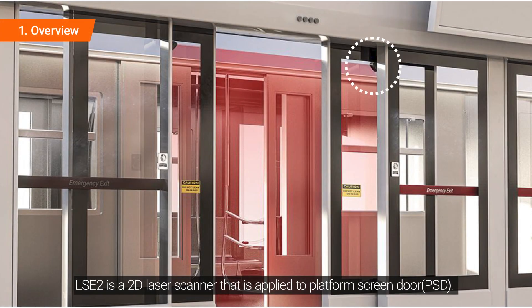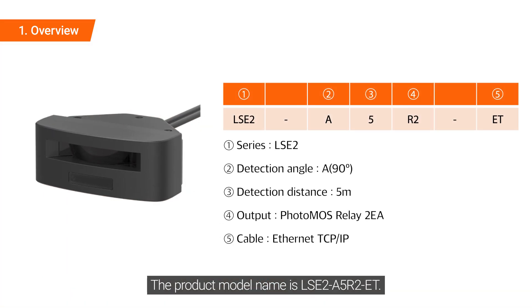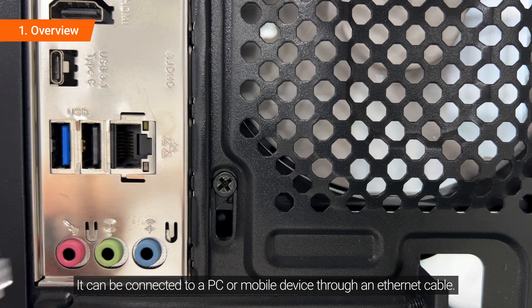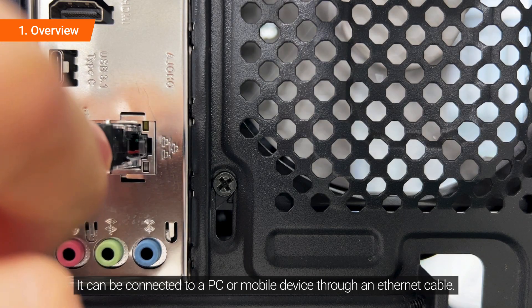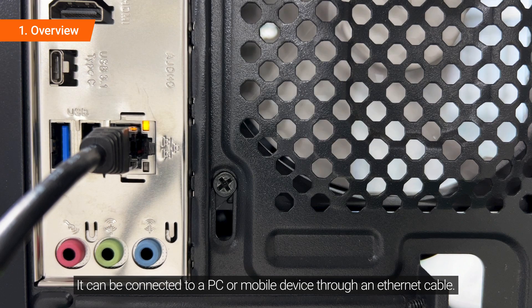LSE2 is a 2D laser scanner applied to platform screen doors. The product model name is LSE2-A5R2-ET. It can be connected to a PC or mobile device through an Ethernet cable.